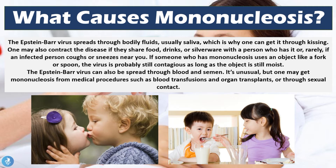The Epstein-Barr virus can also be spread through blood and semen. It is unusual, but one may get mononucleosis from medical procedures such as blood transfusions and organ transplants, or through sexual contact. So while saliva is the main bodily fluid that spreads the disease, in some rare cases it has been determined to involve contact with blood or semen from an infected individual.